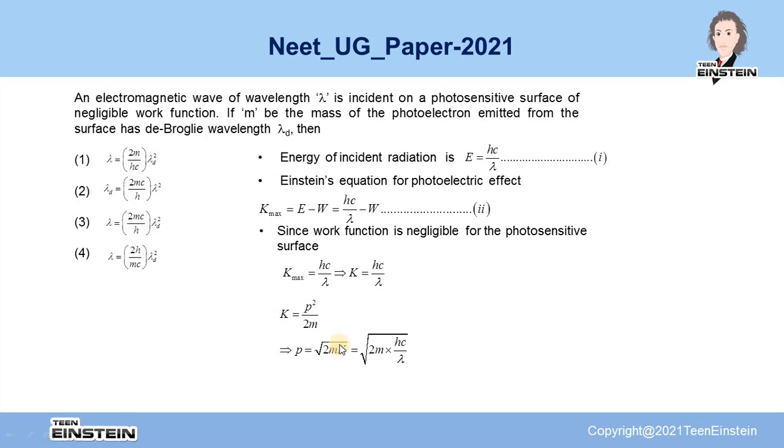This kinetic energy is the maximum kinetic energy of the photoelectron emitted, and that has been calculated as hc/λ for this case. So if we put this hc/λ here, then we get the momentum of the photoelectron to be P = √(2mhc/λ).